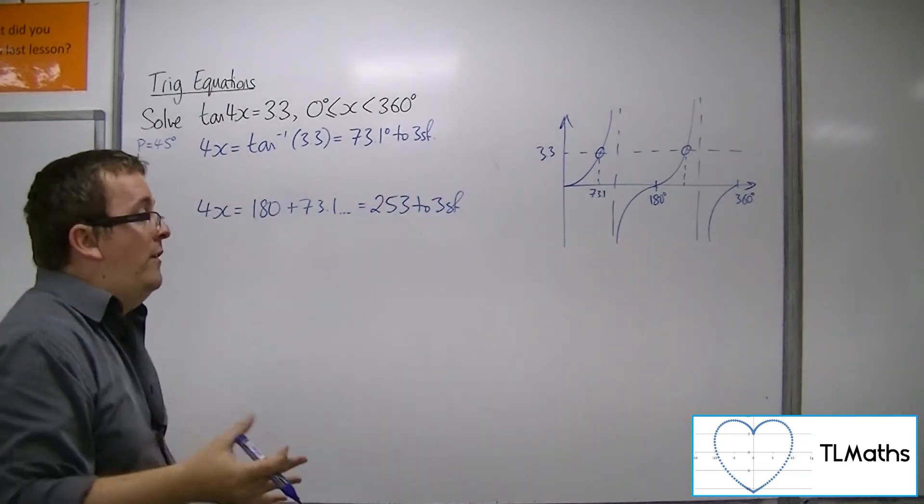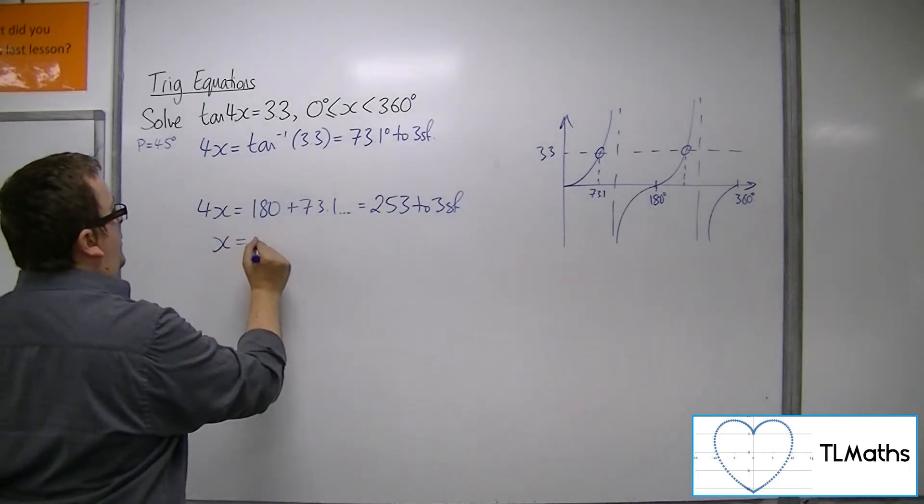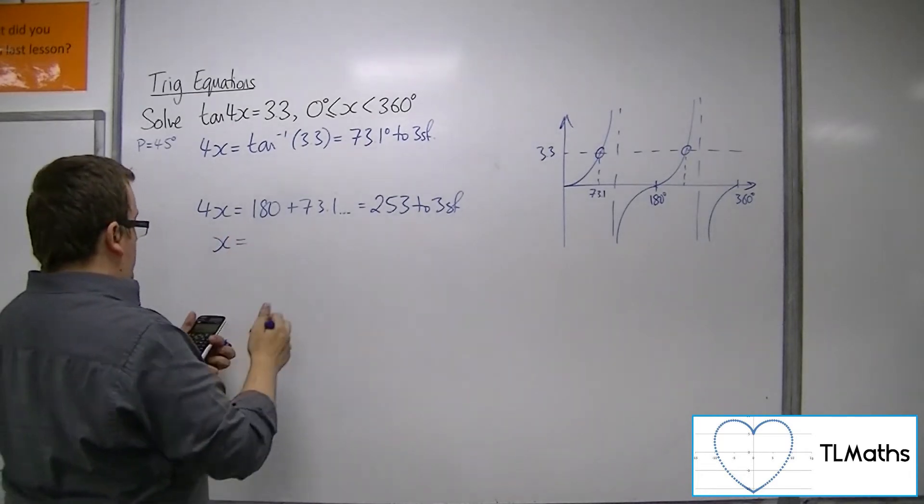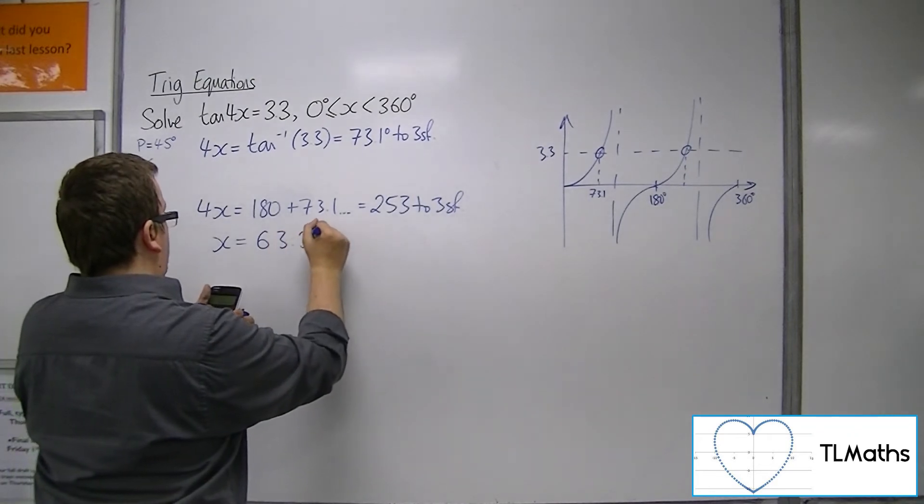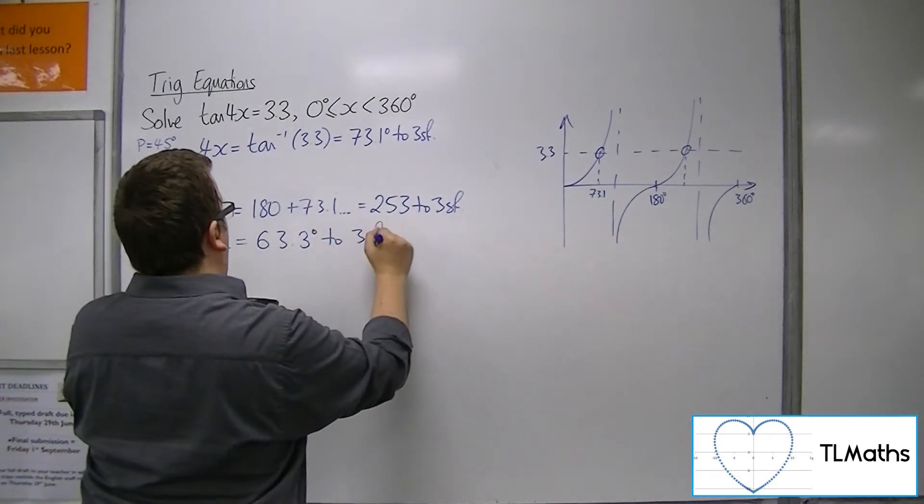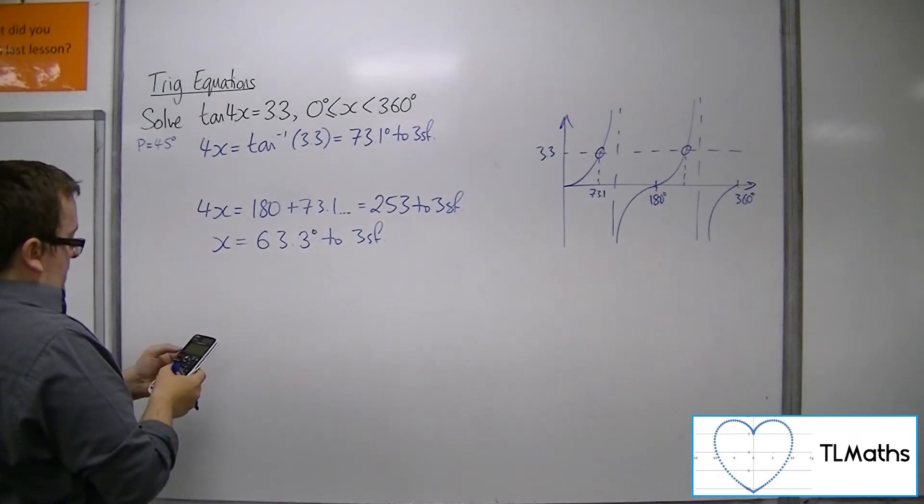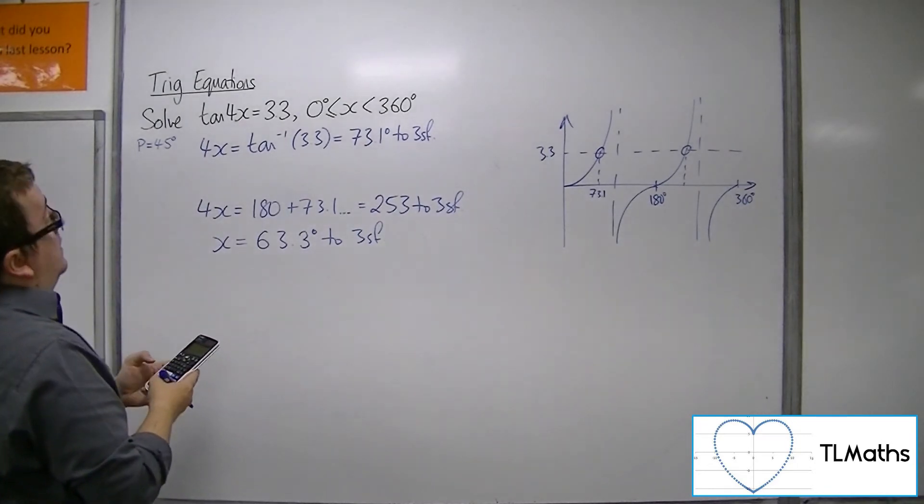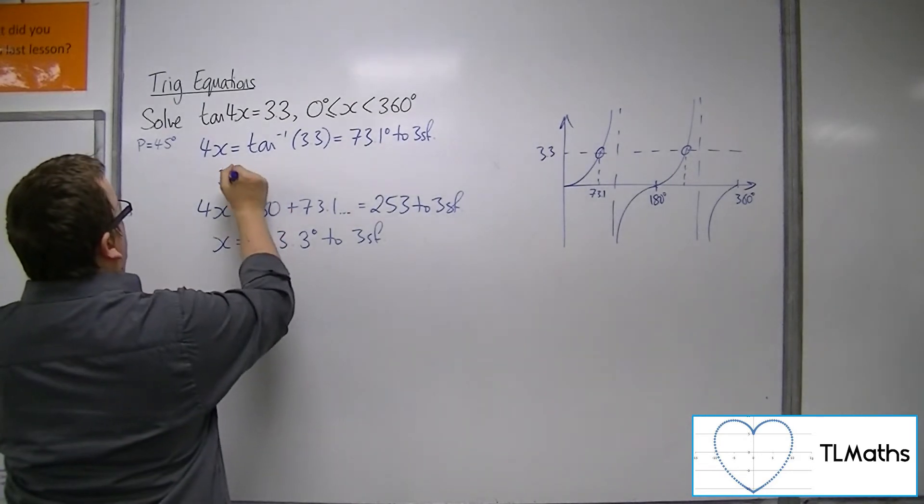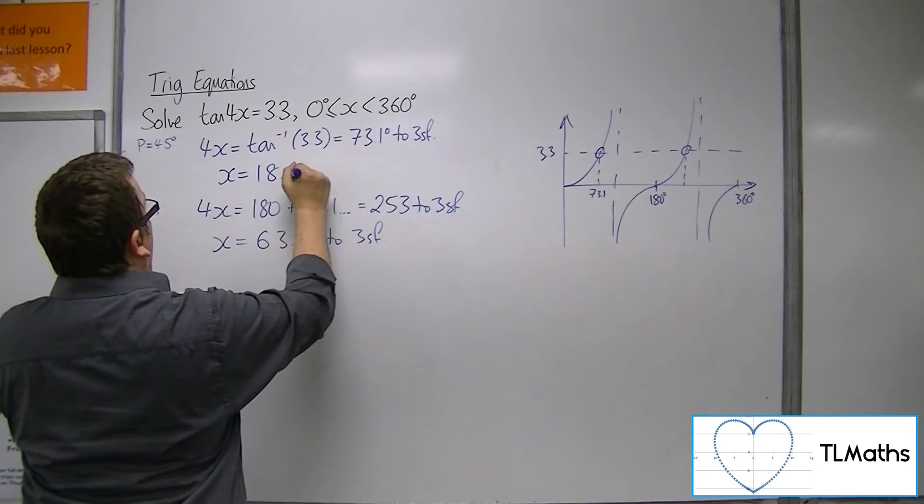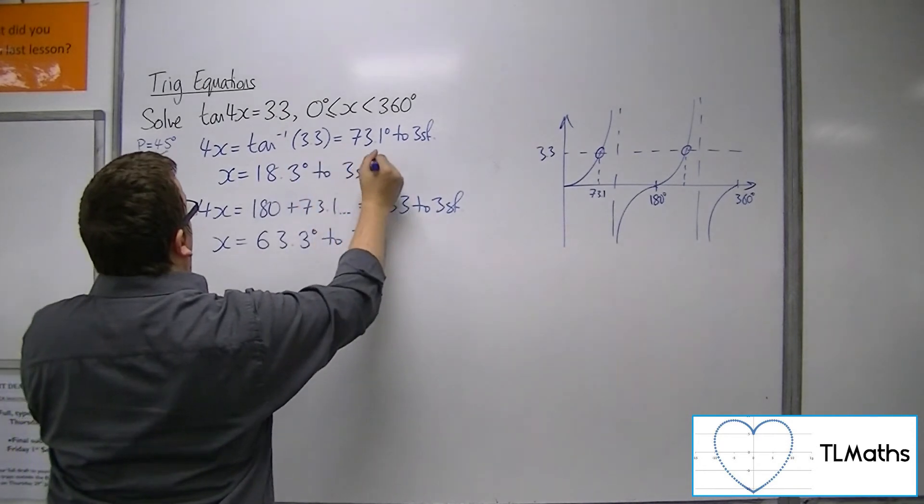Okay, so now we can apply the transformation. Dividing both sides by 4 gets us to 63.3 degrees to 3 sig fig for that one. And inverse tan of 3.3 divided by 4 is 18.3 to 3 sig fig.